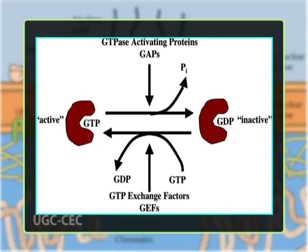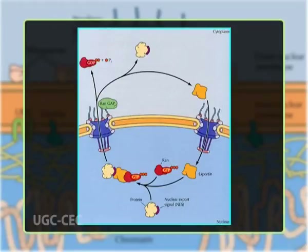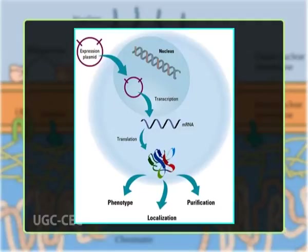Nuclear export roughly reverses the import process. In the nucleus, the exportin binds the cargo and Ran-GTP and diffuses through the pore to the cytoplasm where the complex dissociates. Ran-GTP binds GAP and hydrolyzes GTP, and the resulting Ran-GDP complex is restored to the nucleus where it exchanges its bound ligand for GTP. Whereas importins depend on Ran-GTP to dissociate from their cargo, exportins require Ran-GTP in order to bind to their cargo. A specialized mRNA exporter protein moves mature mRNA to the cytoplasm after post-transcriptional modification is complete.